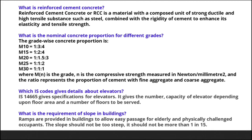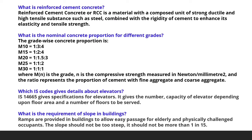The next question is: what is the nominal concrete proportion for different grades? Grade-wise proportions are: M10 = 1:3:6, M15 = 1:2:4, M20 = 1:1.5:3, M25 = 1:1:2, and M30 = 1:1:1. Here M is the grade, N is the compressive strength in N/mm², and the ratio represents the proportion of cement, fine aggregate, and coarse aggregate.